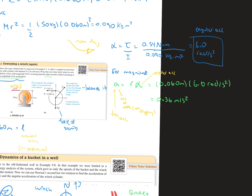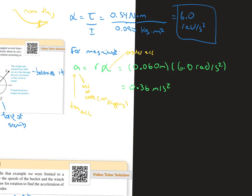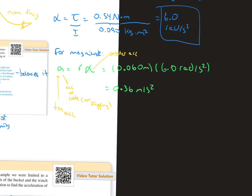Now, why did we find the angular acceleration? Because we need to find the linear acceleration and its magnitude. That would just be the radius times the angular acceleration, or 0.060 times 6 radians per second squared.